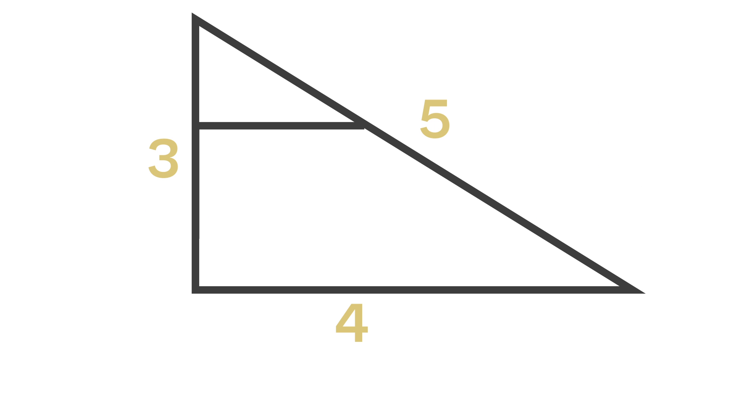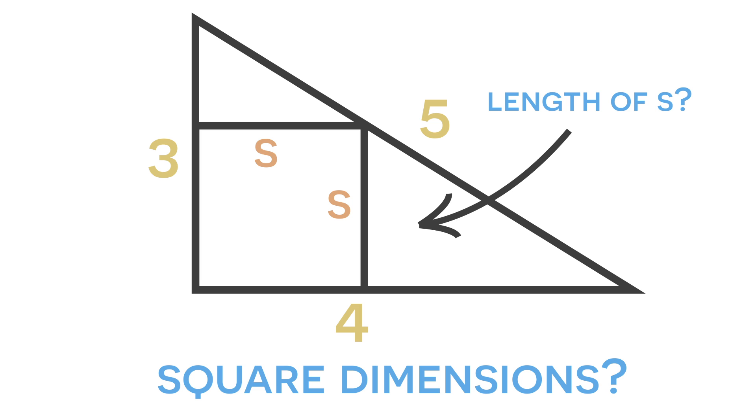Inside of this triangle we have a square with a side length of s. Our goal for this problem is to find the dimensions of the square. We need to find the length of s.